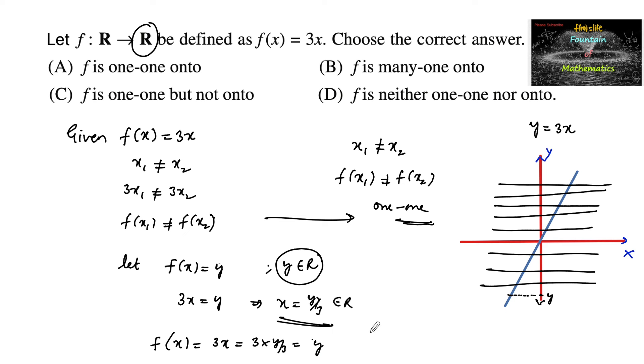So we can say clearly that it's a definition of onto. For some y belongs to R there is some x equals y upon 3 belongs to R such that f(x) equals y, and hence we can say it is onto. So f is both 1 to 1 and onto, and hence the function is bijective, or we can go with option f is 1-1 and onto.